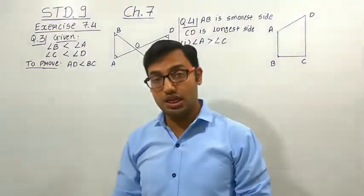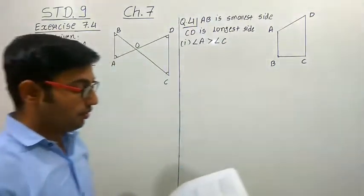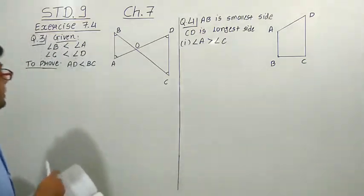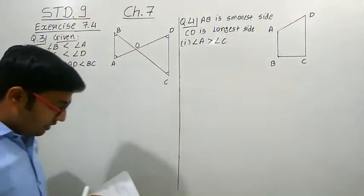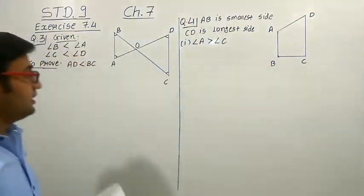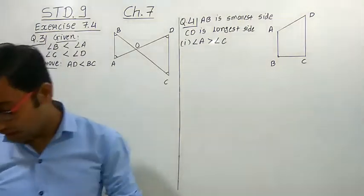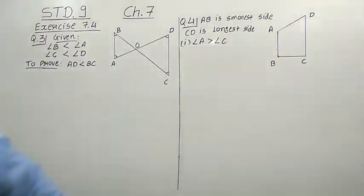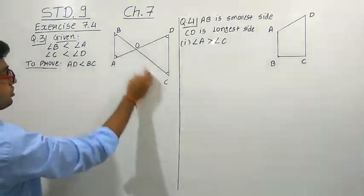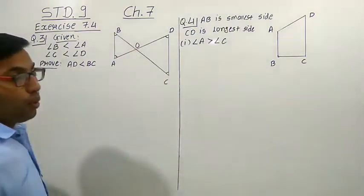We will study question No. 3. The question is: here we have given one figure. In this figure, angle B is less than angle A, and angle C is less than angle D. We have to show that AD is less than BC. This is the diagram in which two triangles OAB and OCD are there, and AD and BC are intersecting at a point O.